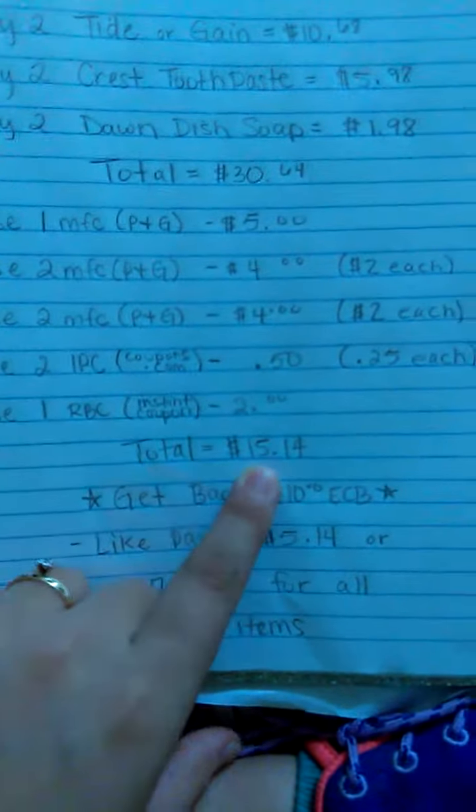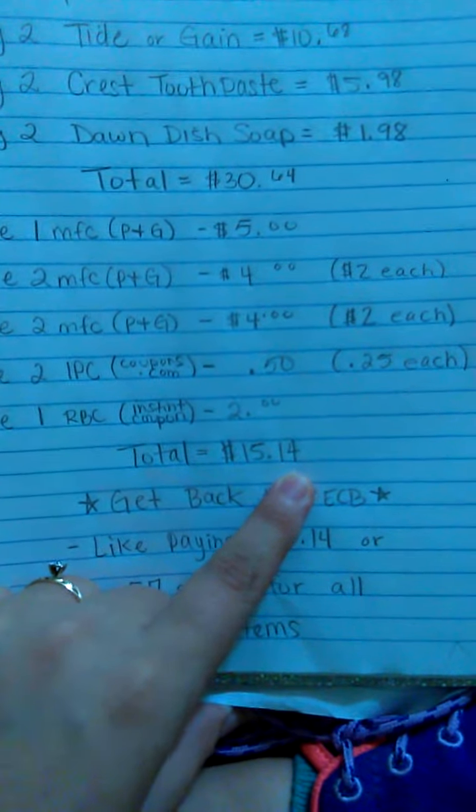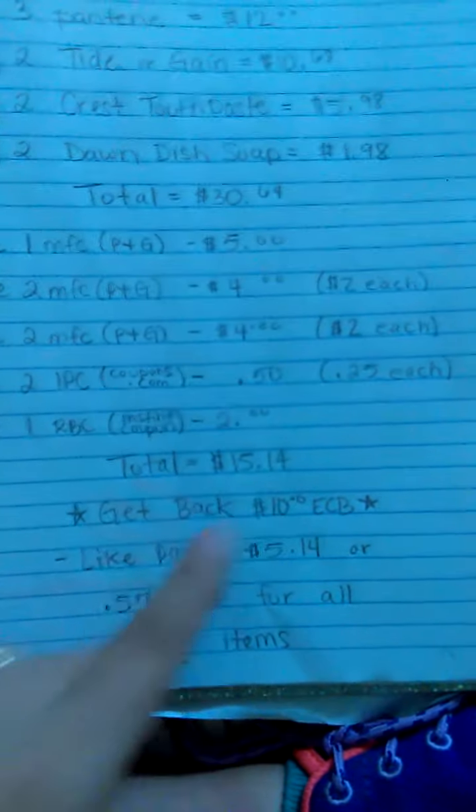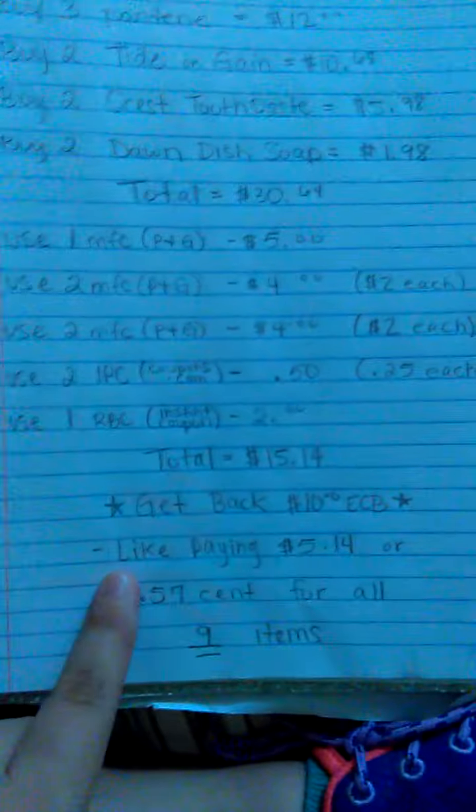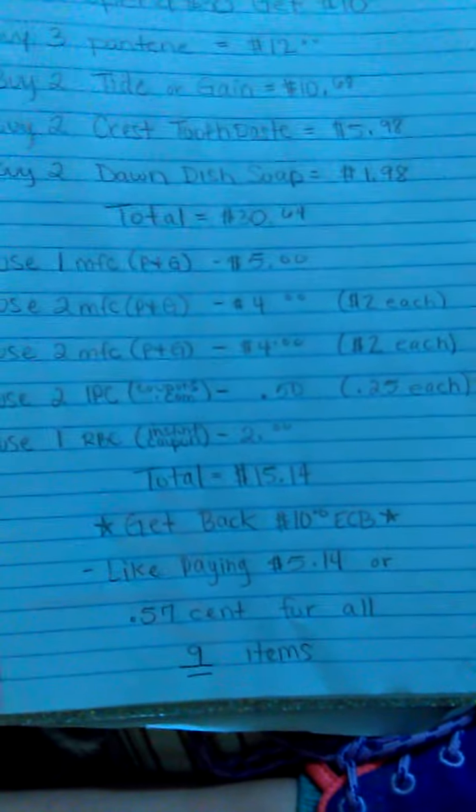And then your total will hit $15.14. That's more than half off guys so we got it down to under $20. That's awesome. You're going to get back $10 ECB. It's like paying $5.14 or 50 cents for all nine items.